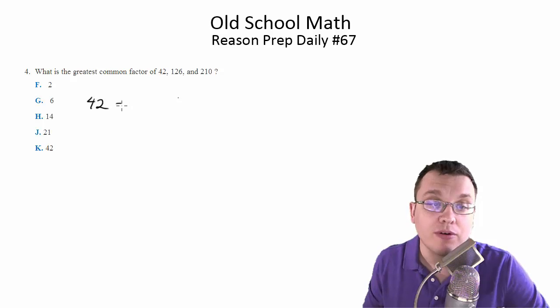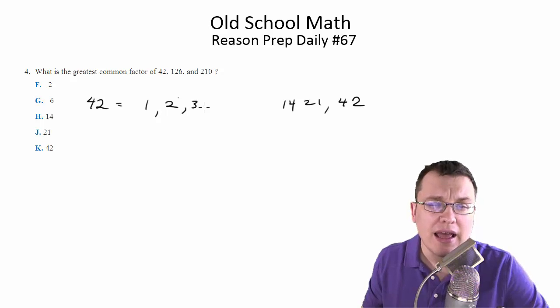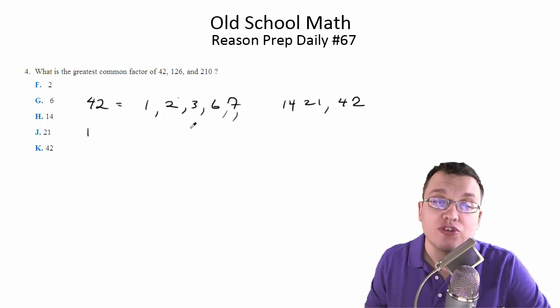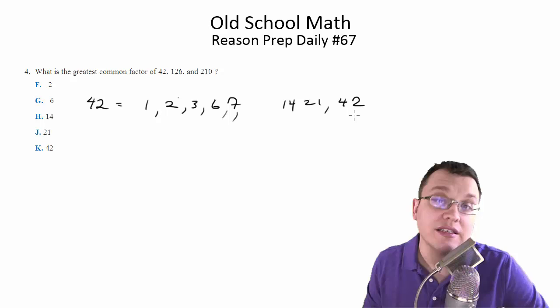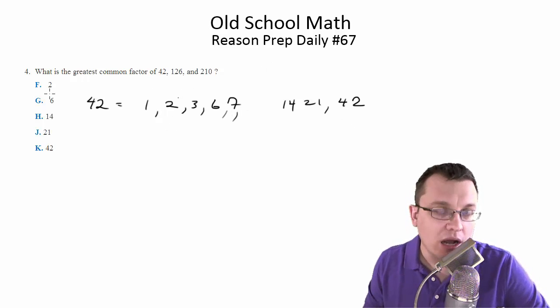So 42, for example, we know the factors of 42 are going to be 1 and 42, and 2 and 21, and 3 and 14, and 6 and 7. So here are all our factors. We would do the same thing for 126, we would do the same thing for 210, and then we would see which factor is the biggest shared between them. So you could do that. It takes a while, though.